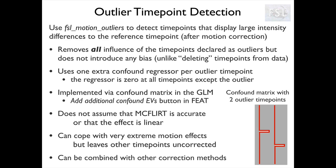The reason why we do this and not add one EV with all the outliers is because we don't want to assume that all the outliers will have the same effect on the data. One outlier might be just above threshold and not have a big impact on the signal. On the other hand, another one could be way above threshold and have a much bigger influence on the data. So we want to model them separately - they will have different parameter estimates so that we can weigh them appropriately.